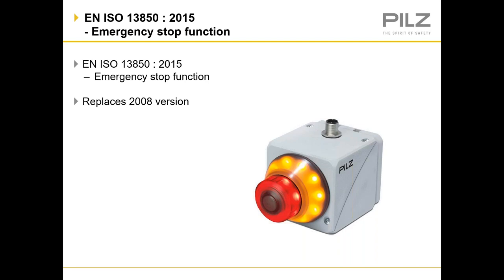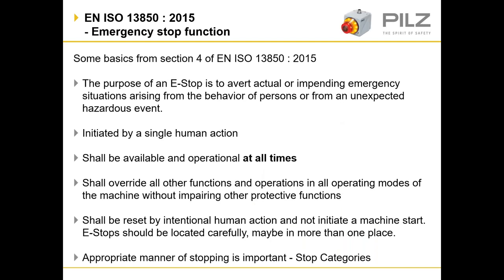This applies if you're building machines or systems. Emergency stops — the king of the stop buttons. Some basics from section 4 of EN ISO 13850: the purpose of an emergency stop is to avert actual or impending emergency situations arising from the behaviour of persons or from an unexpected hazardous event. They should be initiated by a single human action. Emergency stops shall be available and operational at all times — so if you have emergency stops and guard switches in the same series loop, the emergency stop is essentially no longer operational.